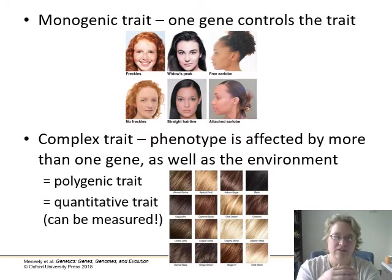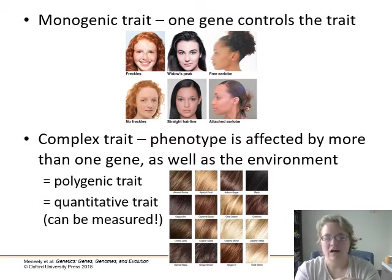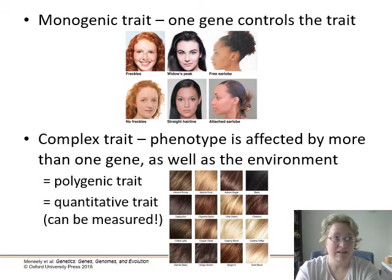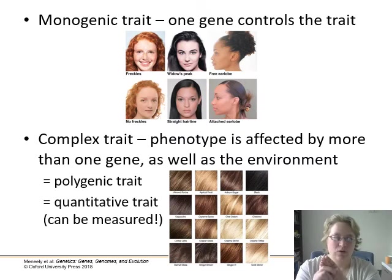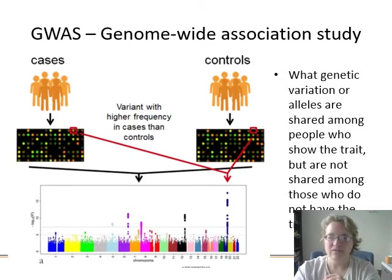These are also known as polygenic traits. Different textbooks use different terms — complex, polygenic, quantitative — but they all refer to the same idea. A quantitative trait is one that can be measured, like human weight or human height. Hair color would be harder to quantify, though you could perhaps measure melanin deposited in hair structure. In short, all three terms refer to multiple genes and the environment contributing to a phenotype.